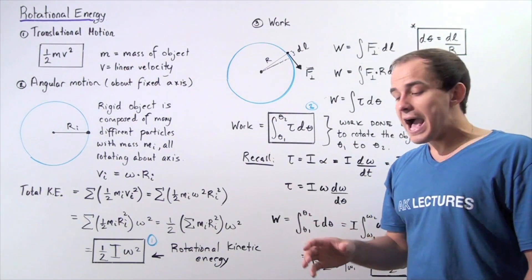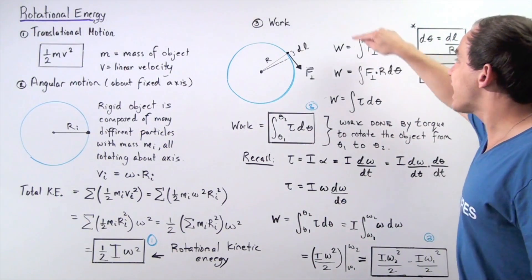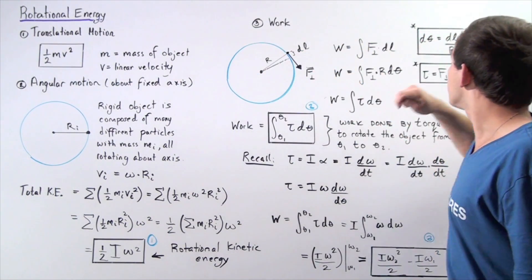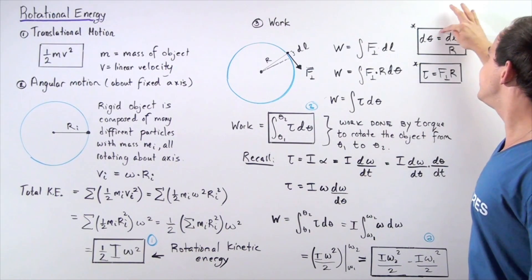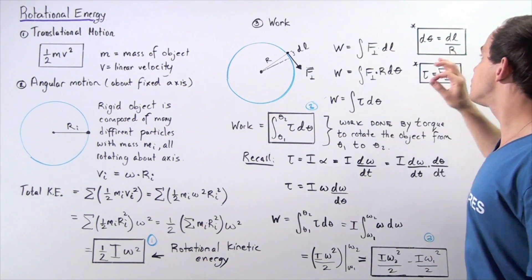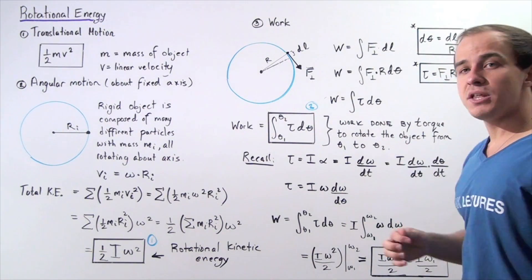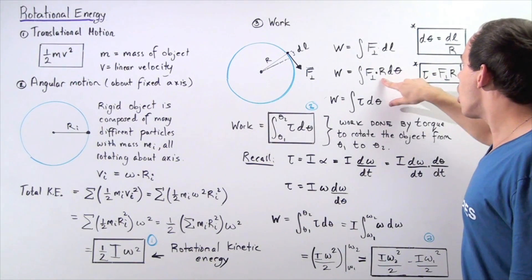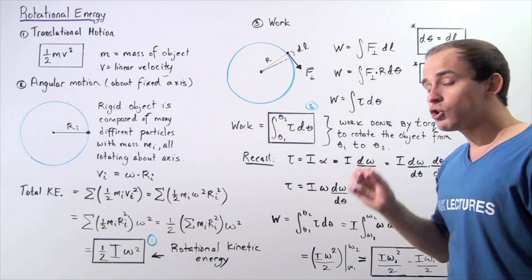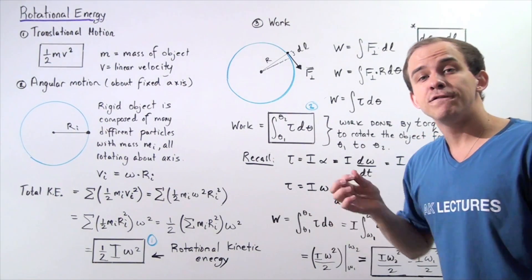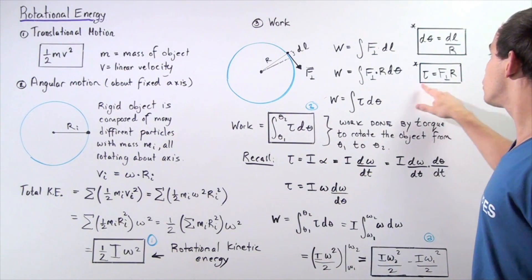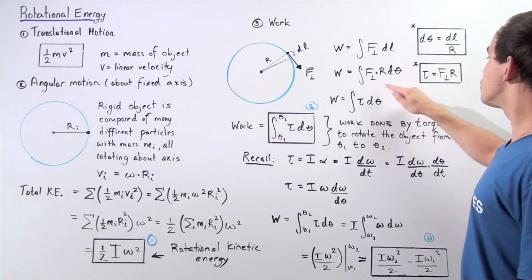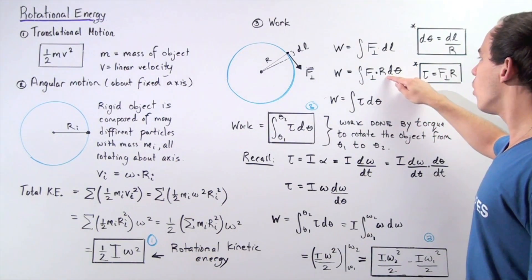Recall our relationship between l — the distance traveled — the angle theta, and our distance r: d theta equals dl divided by r. That means we can represent dl as simply r multiplied by d theta. We replace dl with r d theta. And recall that the torque created by a force is torque equals the force acting perpendicular to the distance r — so we can replace the entire term F times r with simply torque.